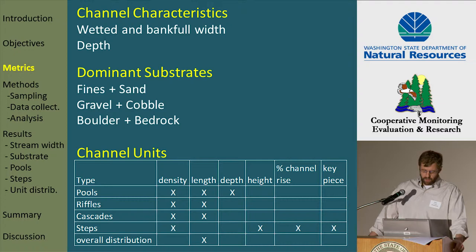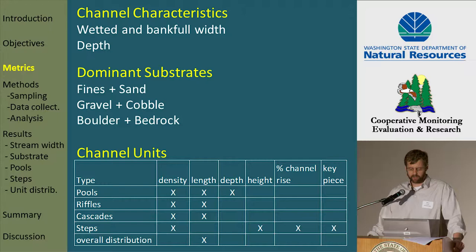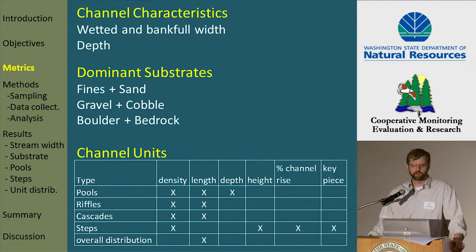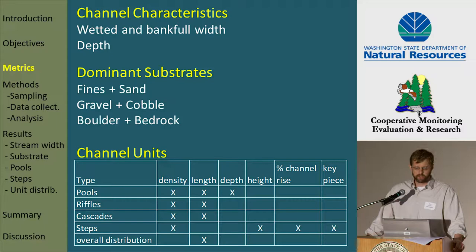The metrics for assessing the gross channel characteristics or dimensions were the wetted and bankful width and depth. For substrates, we assessed the dominant substrates in three groupings: fines and sand; our moderate-sized substrates, gravel and cobble; and our largest substrates, boulder and bedrock. We classified our streams according to four channel unit types, and for each we could assess the overall density of those units and different measures of their size.